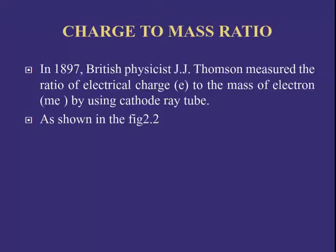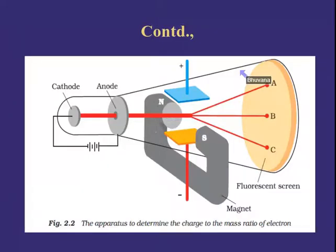The next concept is the charge-to-mass ratio. In 1897, British physicist J.J. Thomson measured the ratio of electrical charge to the mass of electrons using a cathode ray tube. As shown in this figure, the setup consists of cathode and anode electrodes connected to high voltage, along with a magnet with negative and positive sides, and a fluorescent screen, to determine the charge-to-mass ratio of electrons.